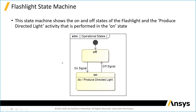This shows the states of the flashlight — a very simple example. The flashlight has two states: on and off. You can see the transitions, the triggers that transition from the off state to the on state.